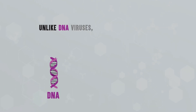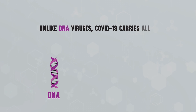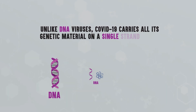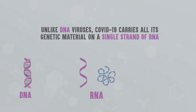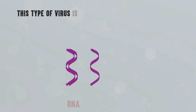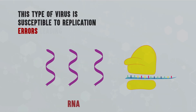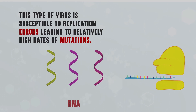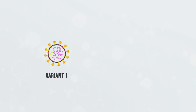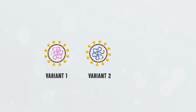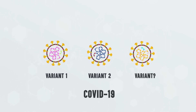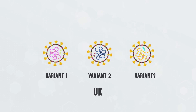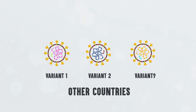Unlike DNA viruses, COVID-19 carries all its genetic material on a single strand of RNA. This type of virus is susceptible to replication errors, leading to relatively high rates of mutations. The outcome of these mutations is a variant of COVID-19, like the ones recently identified in the UK and other countries.